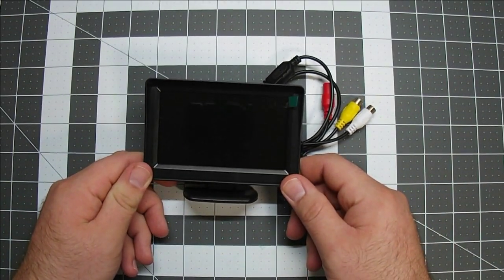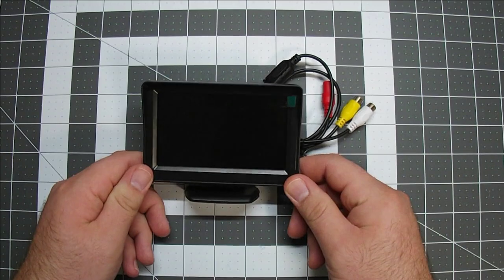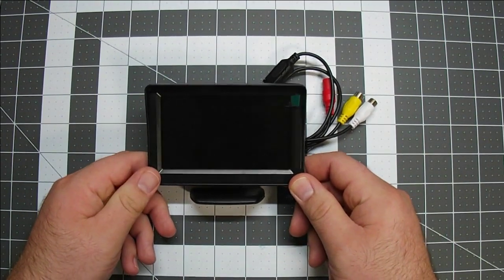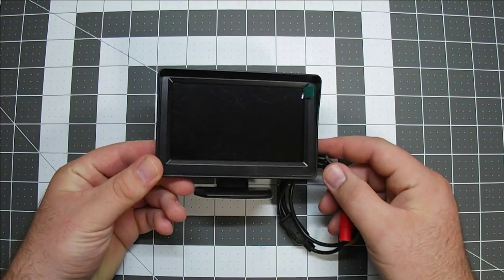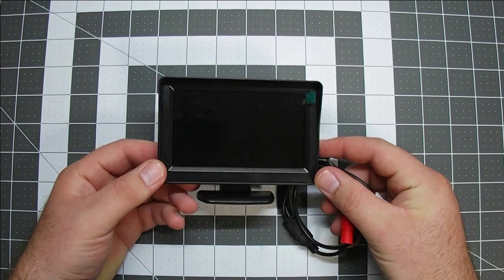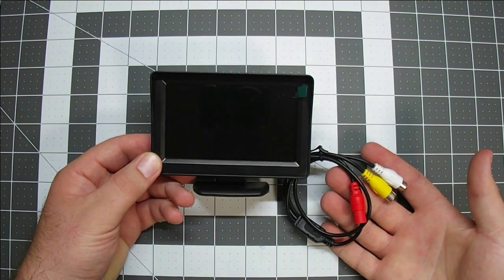Hello everyone. Today I'd like to show you how I build the monitor portion of my night vision scope adapters. I start with one of these 4.3 inch LCD screens that I get from Banggood.